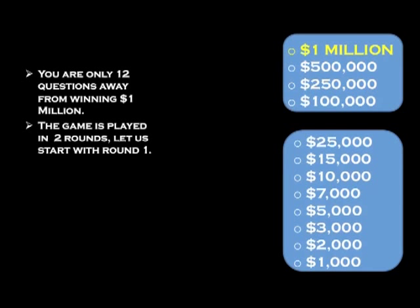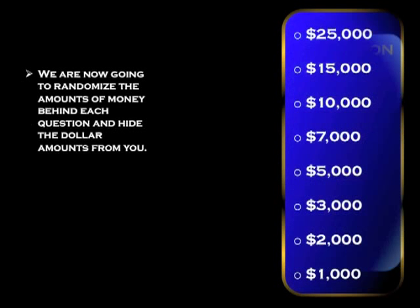In this game, there are only 12 questions to the million. This is sort of a hybrid version where there are two rounds. I'll explain it as we keep going. So you're brought to this screen, then you hit next again and you're given the round 1 money tree.